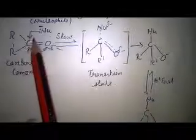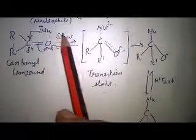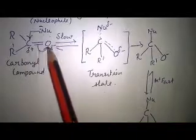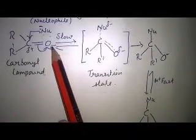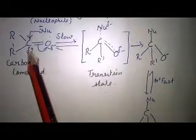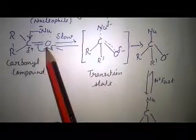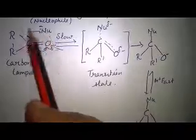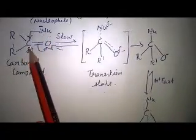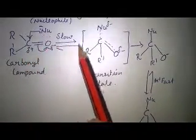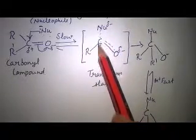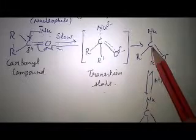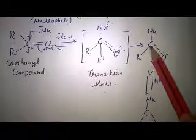Now, here is the mechanism of nucleophilic addition reaction. This is the carbonyl group. Oxygen carries a partially negative charge and carbon carries a partially positive charge due to the difference in their electronegativity. Then there is an addition of the nucleophile which attacks the positively charged carbon. Since this is nucleophilic, this reaction is slow. The nucleophile attaches with the carbon, forming a transition state, and then a stable state with the nucleophile attached to the carbon.